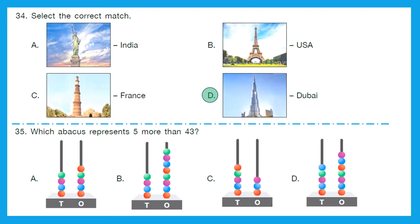Question 35: Which option represents 5 more than 43? First we solve: 5 more than 43 means 48, since 43 plus 5 equals 48. Now checking the options: A represents 46, B represents 48, C represents 53, and D represents 57. Option B is the right one because it represents 48 — that is 5 more than 43. With this, we have successfully solved another question paper for class 1 IGQ.